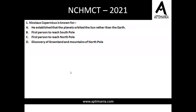The first question of the GK section was: Nicholas Copernicus is known for what? The correct answer is option A — he established that the planets orbited the sun rather than the earth.